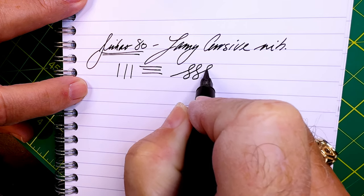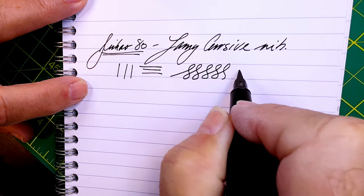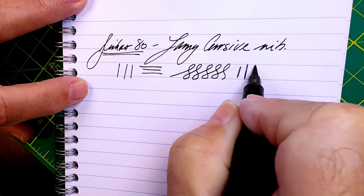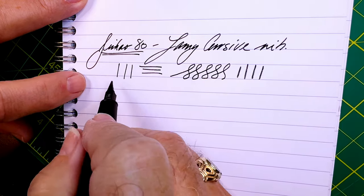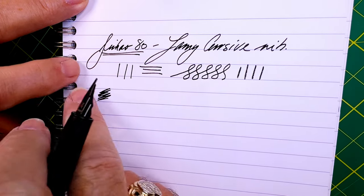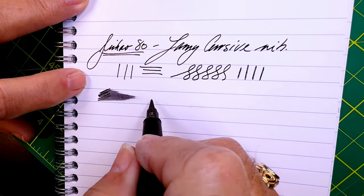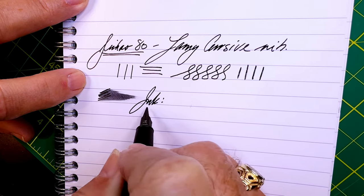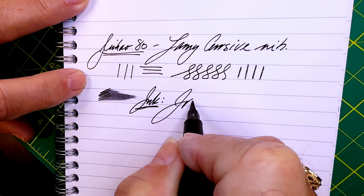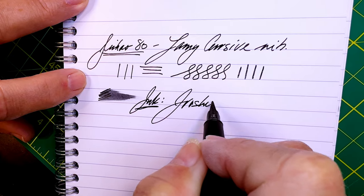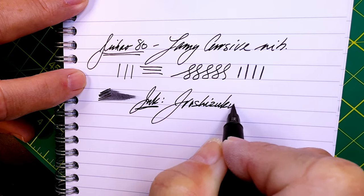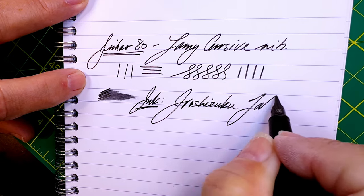So yeah, you do get a little bit of natural line variation. Of course pushing it, it's fairly stiff - it's a steel nib. Check the wetness - it looks pretty wet. And this ink is Iroshizuku Take-Sumi.